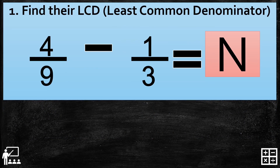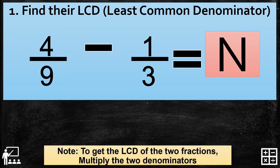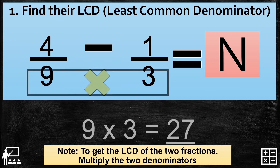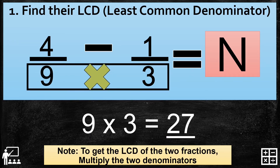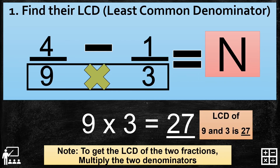Find their LCD or the least common denominator. To get the LCD of the two fractions, multiply the two denominators. Our denominators this time are 9 and 3. So 9 multiplied by 3 gives you 27. The LCD of 9 and 3 is 27, and our new denominator is 27.